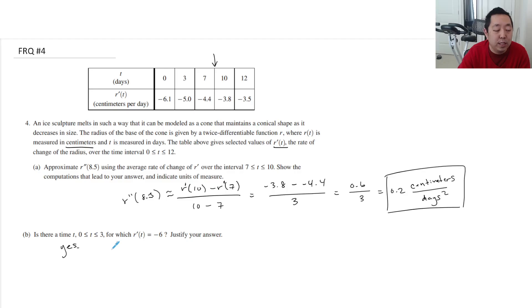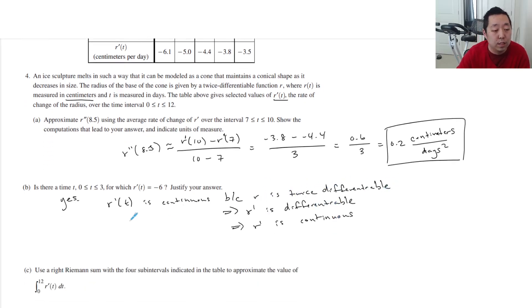So first of all, what's the conditions for intermediate value theorem? r'(t) is continuous because r is twice differentiable, which means that r' is differentiable, which means r' is continuous. Because if r' is differentiable, then r' is continuous. Why is r' differentiable? Because there's two derivatives. And then we know r'(0) is less than -6, r'(3) is greater than -6. Therefore, by intermediate value theorem, there exists a c such that r'(c) is equal to -6 and c is between 0 and 3.